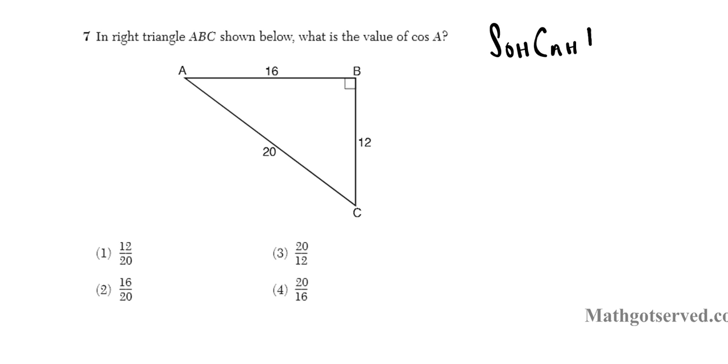SOHCAHTOA. So sine is basically opposite over hypotenuse, cosine is adjacent over hypotenuse, and tangent is opposite over adjacent. In order to use SOHCAHTOA, you must have a reference angle. What is the reference angle in this case? It is angle A as indicated here. So let's mark angle A. So this will be the basis of our labeling.